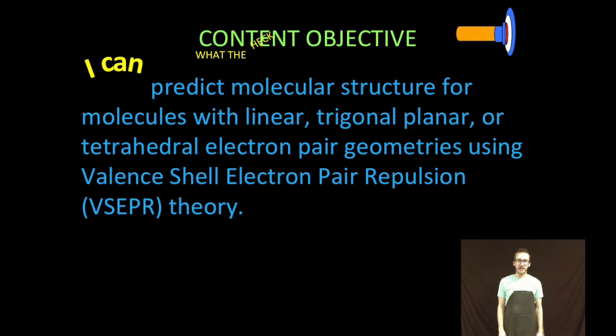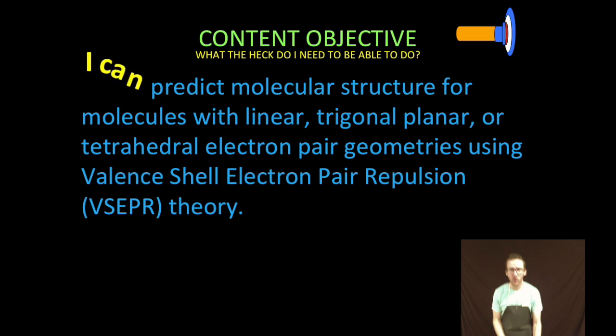Hey what's up everybody, it is Mr. Boylan. And today, what in the heck are we gonna do in this video? We are going to predict molecular structure for molecules with linear, trigonal planar, or tetrahedral electron pair geometries using valence shell electron pair repulsion, or VSEPR theory.